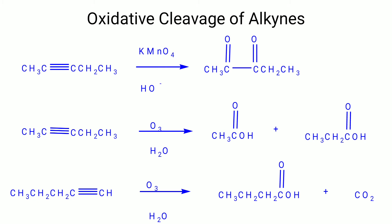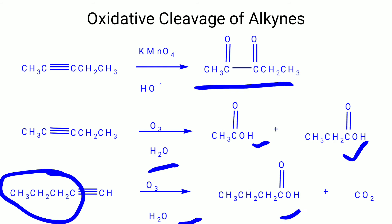Next is the oxidative cleavage of alkynes. When an alkyne reacts with KMnO4 under basic conditions (OH⁻), only the double bond is broken and we get a diketone compound. When that compound undergoes ozonolysis in the presence of water, ozonides form and we get two types of products — acids. In another case, an alkyne on ozonolysis gives an acid and the terminal CH is converted to CO2.